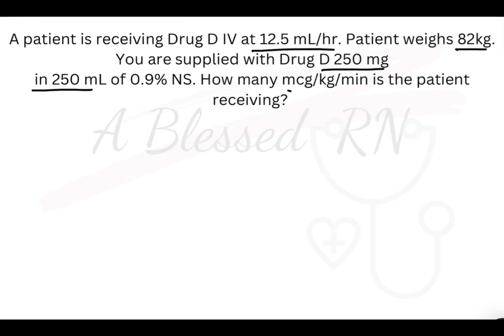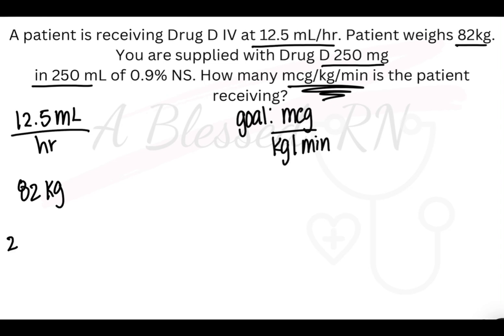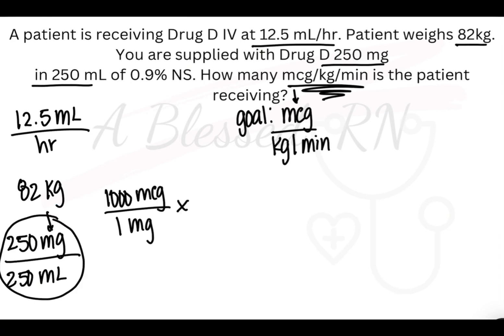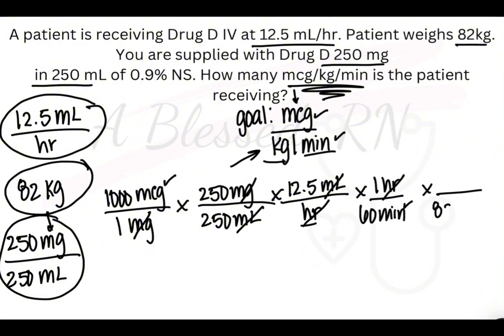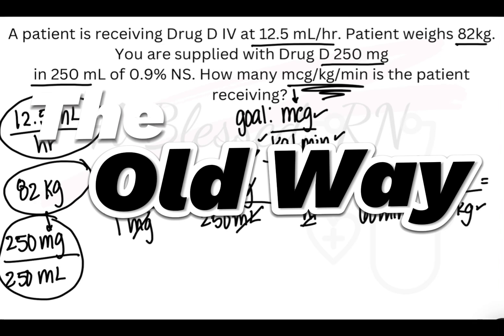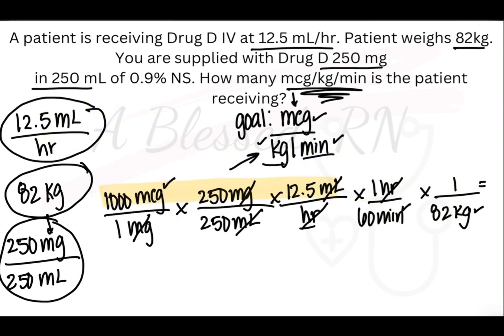Alright, so you have this big doozy of a problem. Looks kind of complicated. I'm just going to show you how I go through it — it's sped up quite a bit, but there is another video showing you step-by-step how to break it down. So you see everything is crossed out except for our goal, and now we have to calculate it.